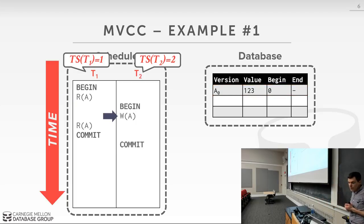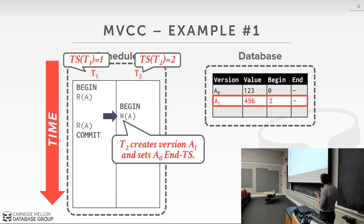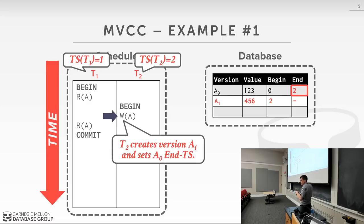When transaction T2 with timestamp 2 wants to write on A, we create a new version A1, set its begin timestamp to 2, set its end to infinity, and go back and update the end timestamp of the previous version A0 to be 2. This says that version A0 is only visible between timestamps 0 and 2. Anybody with timestamp 3 or later would skip this version and read A1, which has range 2 to infinity.